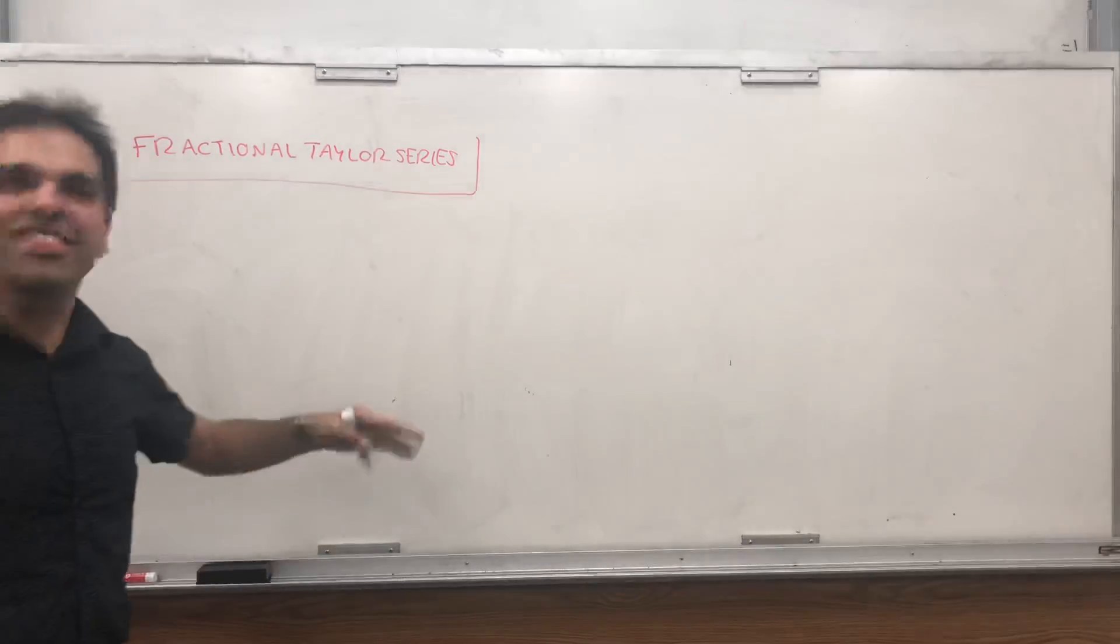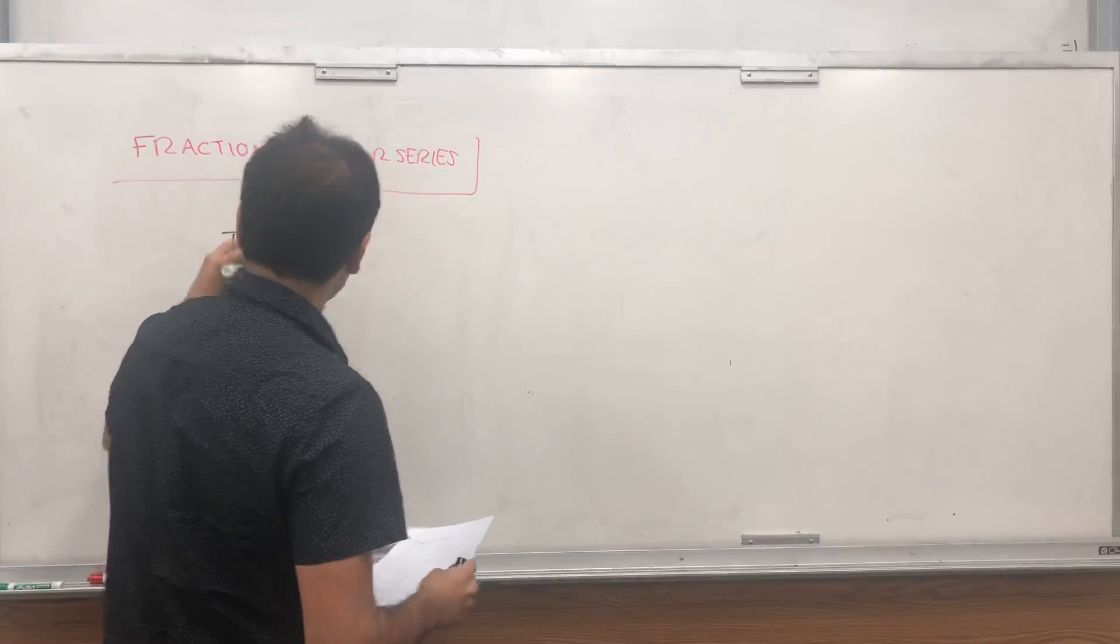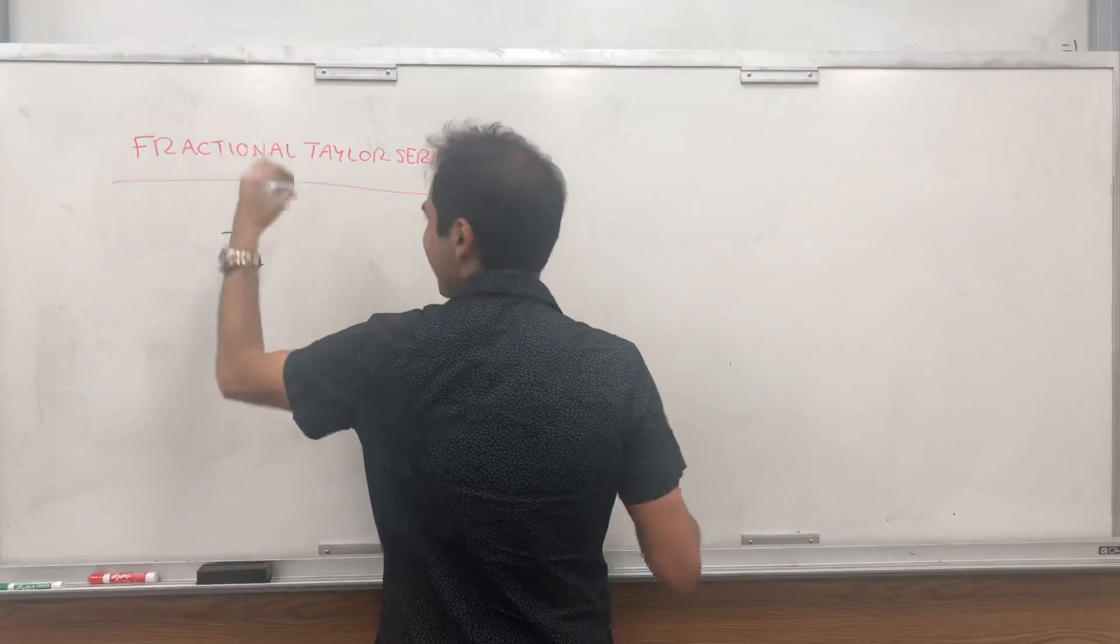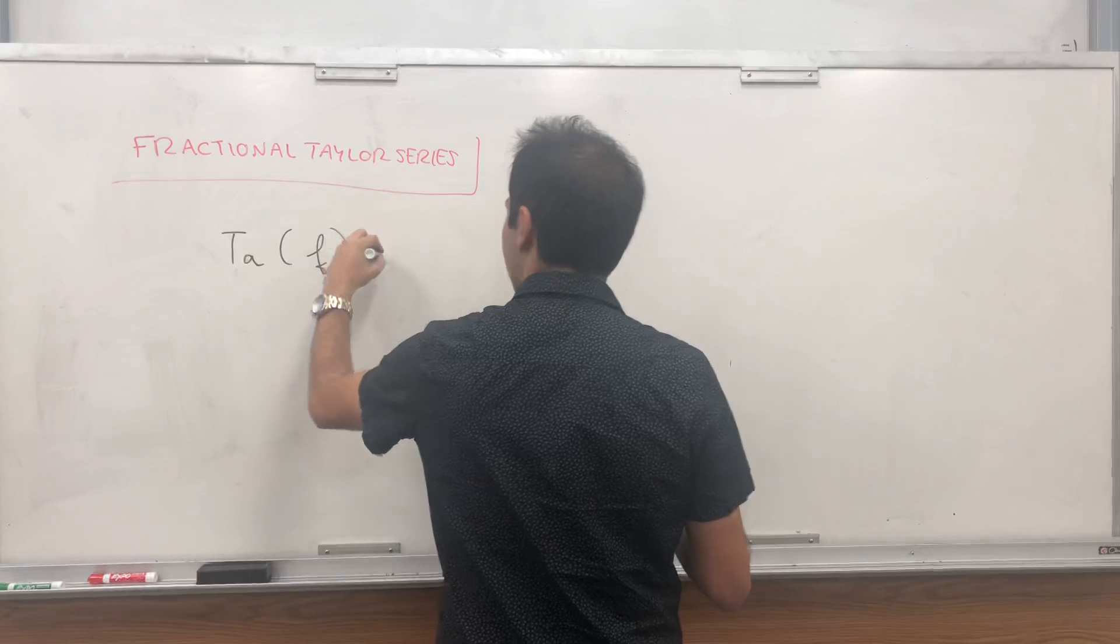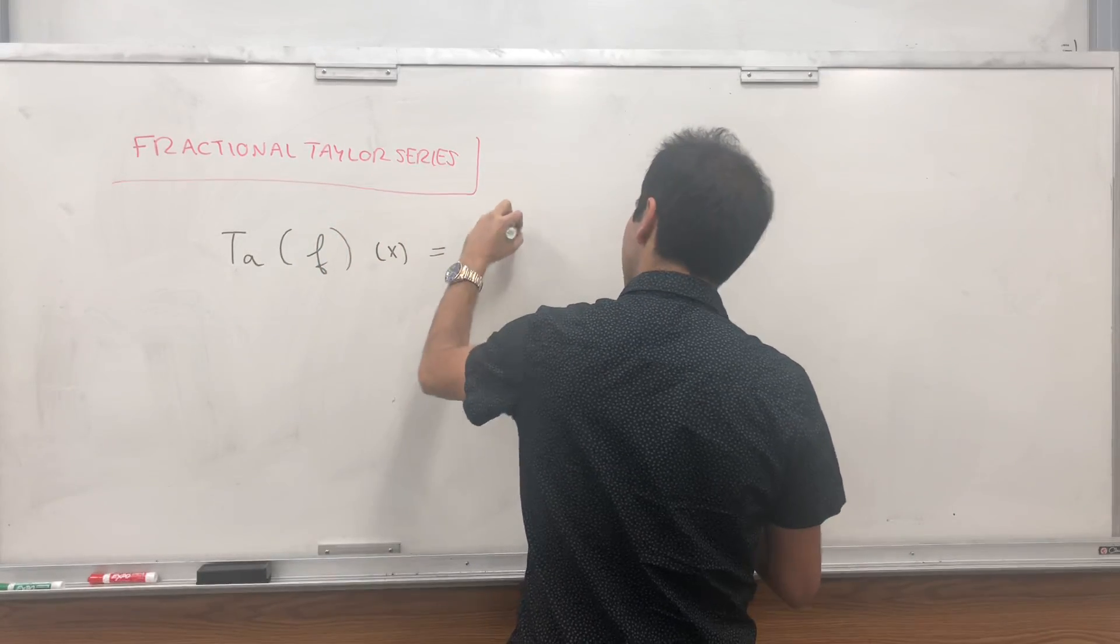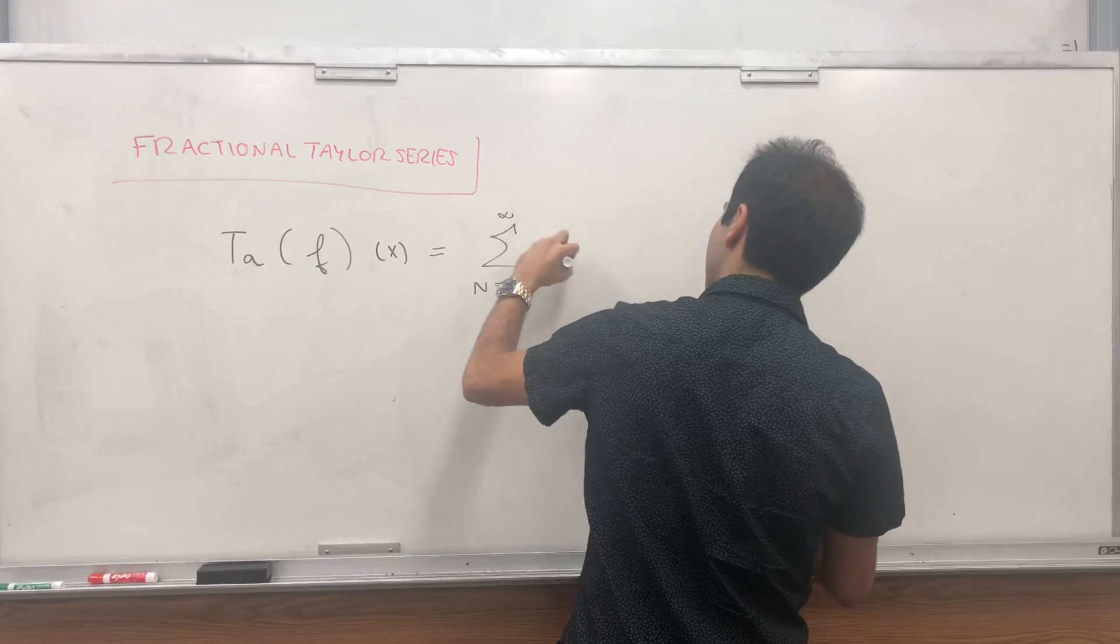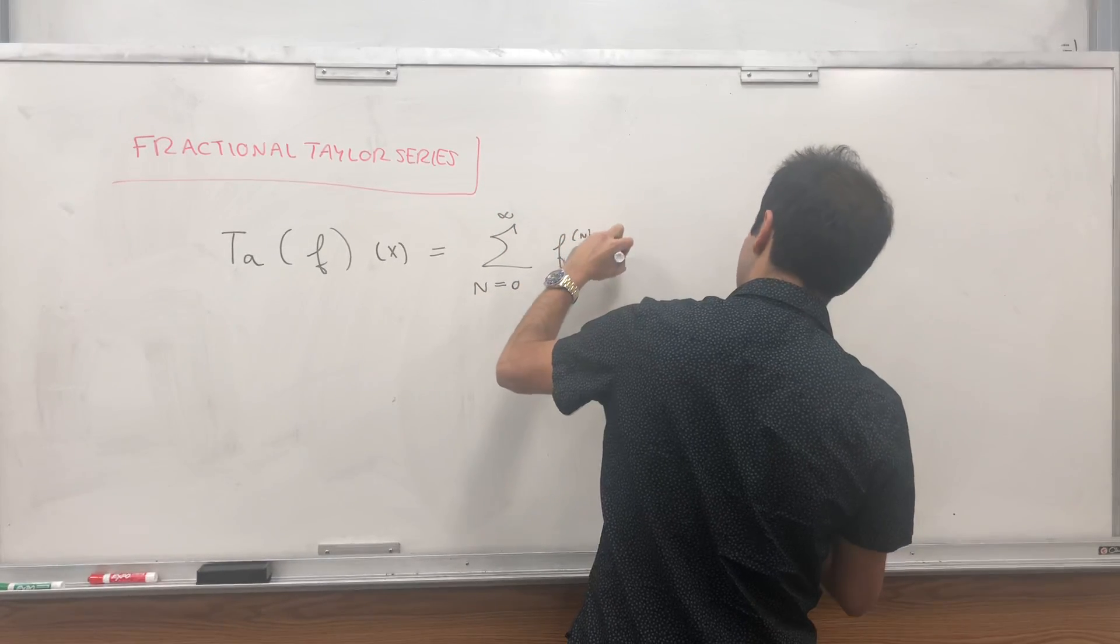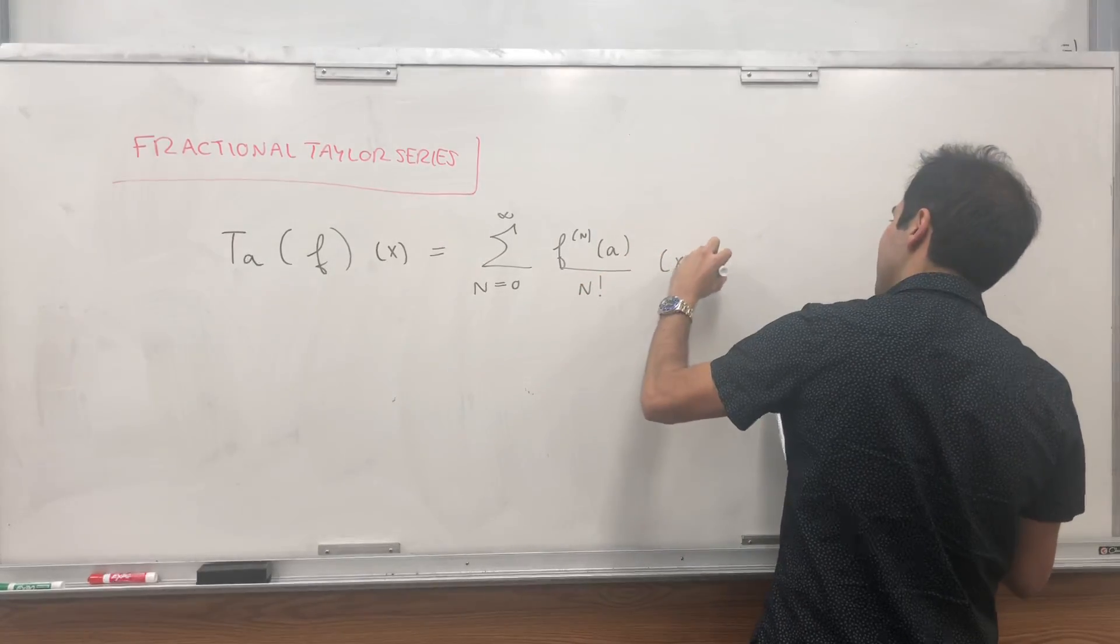So previously in calculus, you probably learned about the Taylor series of a function, which let me write as Ta, like Lando Calrissian, of f. So the Taylor series of f at x is the sum from n equals 0 to infinity of the nth derivative of f at a over n factorial times x minus a to the n.